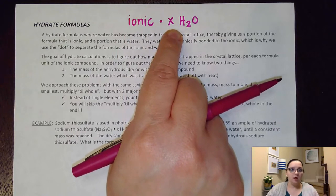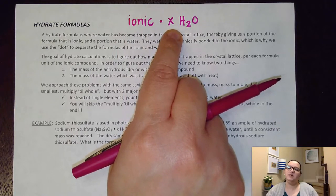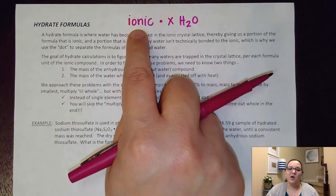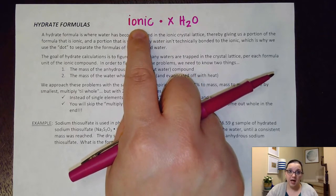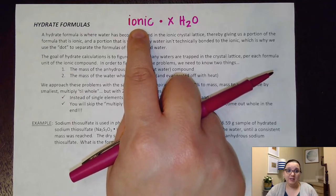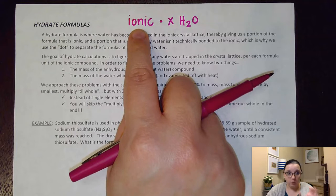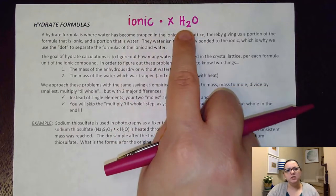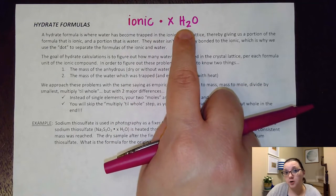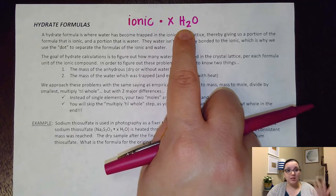Now to solve these problems I really need two key pieces of information. I need to know how much of this ionic compound I have mass-wise, so I need to know the anhydrous portion of this, the without water portion. And then I also need to know how much water I drove off when I heated it up.